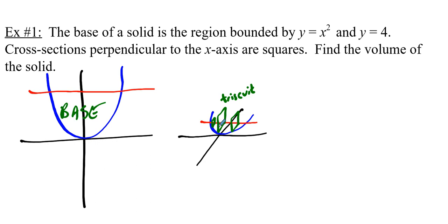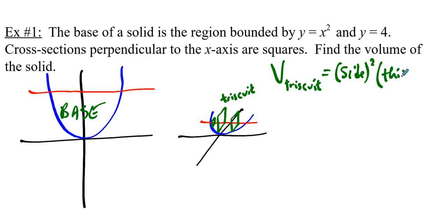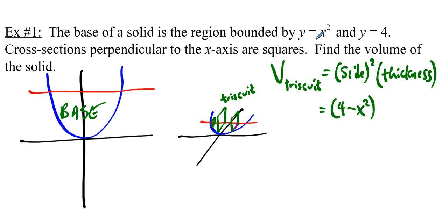We want to find the volume of the solid. The volume of a Triscuit is the area of a square times the thickness — that's length times width times depth, or side squared times thickness. The side of a Triscuit runs from the red curve to the blue curve, so the side length is 4 minus x squared.